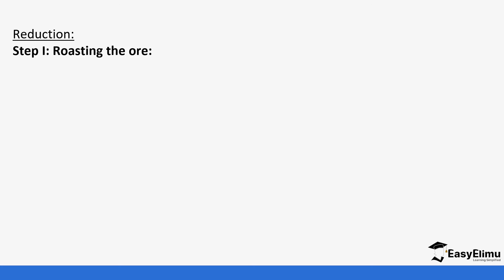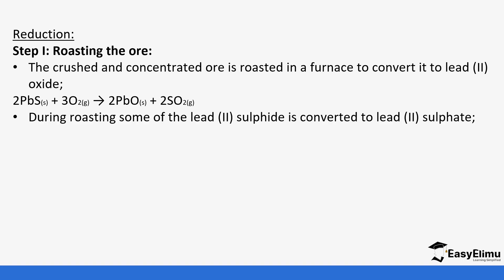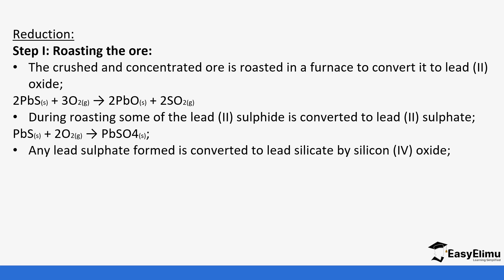In the reduction process, the first step is roasting the ore. This means heating the sulfide to obtain the oxide, which we then want to reduce. Lead sulfide is heated in a furnace in the presence of oxygen to form lead oxide and sulfur dioxide. During roasting, some of the lead sulfide is also converted to lead sulfate.